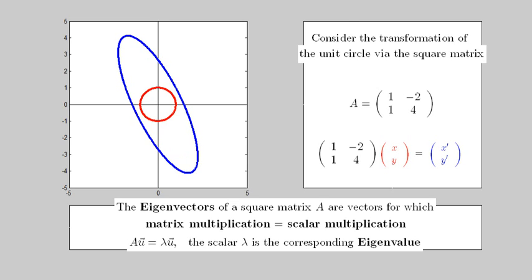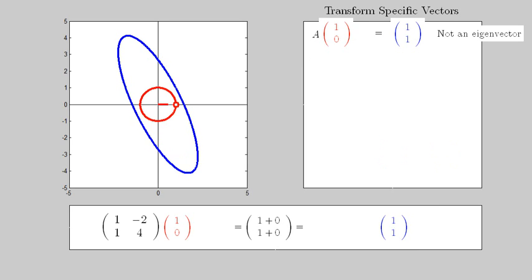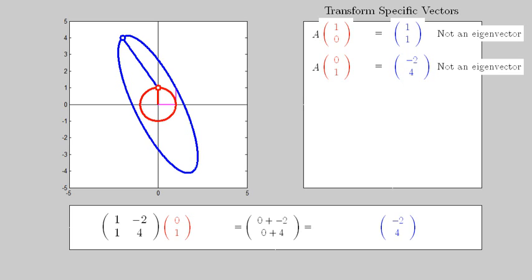The first three examples here are not eigenvectors because their image is not a scalar multiple of the pre-image. For example, (0, 1) is not a multiple of its image (-2, 4), which is demonstrated by the observation that they are not collinear with the origin.